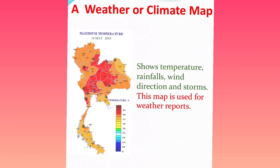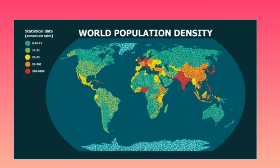Now we shall move to the first thematic map — the climate map. A weather or climate map gives us information about the temperature, rainfall, and the direction of wind, and what the climatic conditions are. We get only this type of information in a weather or climate map. Next, the population map gives us information only regarding population. You can see on the screen — this is the world population density map. Density means how many people are living per one square kilometer. Only this kind of information you can get in this map; no other information will be available.